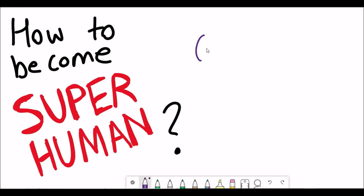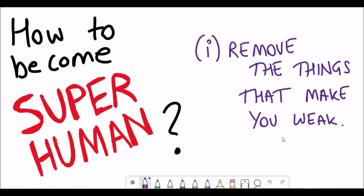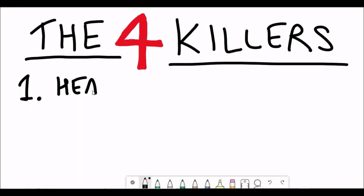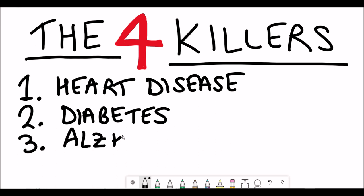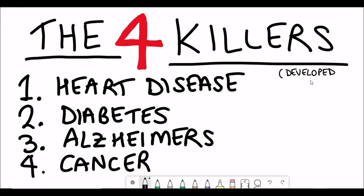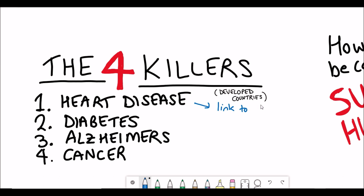So how does Dave Asprey reckon you can become superhuman? Broadly, he says the one thing you need to do is remove the things that make you weak. This is to avoid what Dave refers to as the four killers - heart disease, diabetes, Alzheimer's, and cancer. These killers are more the killers of the developed world as it ignores infectious diseases. One thing that links these different killers together is inflammation, which is critical and underpins the process of aging.